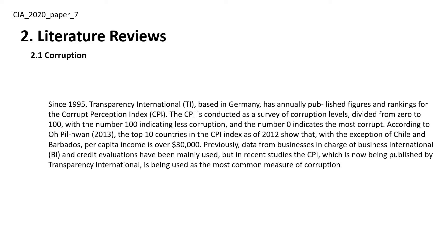According to O-Pil-Huan in 2013, the top 10 countries in the CPI index as of 2012 show that, with the exception of Chile and Barbados, per capita income is over $30,000. Previously, data from business intelligence organizations and credit evaluations were mainly used. But in recent studies, the CPI published by Transparency International is being used as the most common measure of corruption.